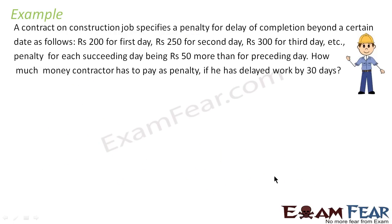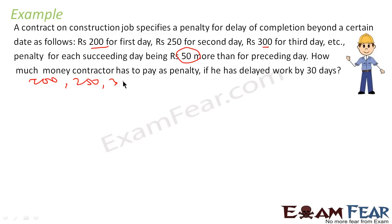Let us take one more example. A contract on a construction job specifies a penalty for delay of completion beyond a certain date: 200 rupees for the first day, 250 for the second day, 300 rupees for the third day, and so on — 50 rupees is added each day. The work is delayed by 30 days, so N = 30. We have to find the total loss.